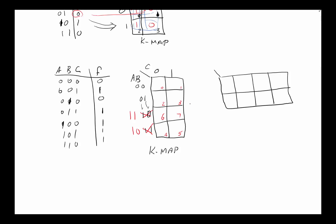Now we can fill in the function values: at minterm 0 it's 0, minterm 1 is 1, minterm 2 is 0, minterm 3 is 1, minterm 4 is 1, minterm 5 is 1, minterm 6 is 1, and minterm 7 is 0. With this arrangement, every square that is up, down, or sideways from another is a neighbor — meaning only one variable changes between them.